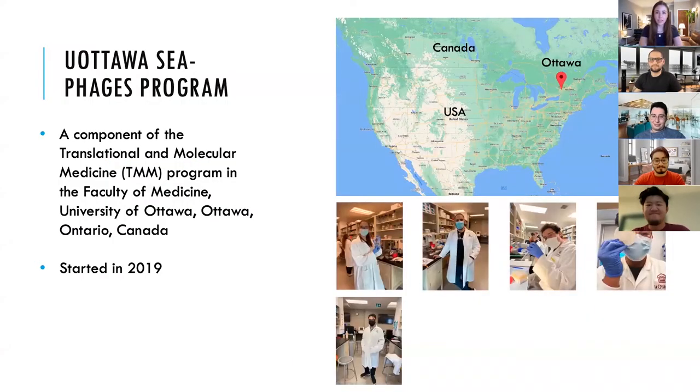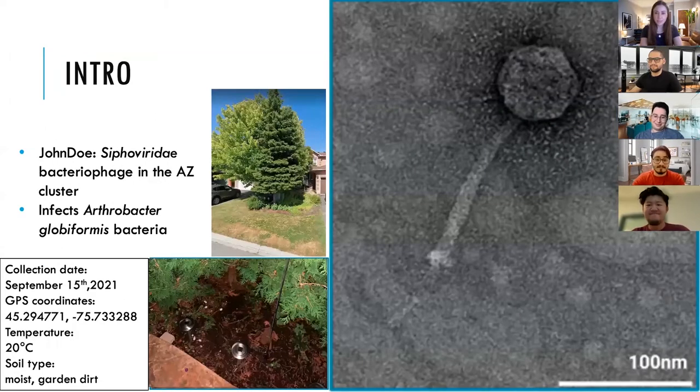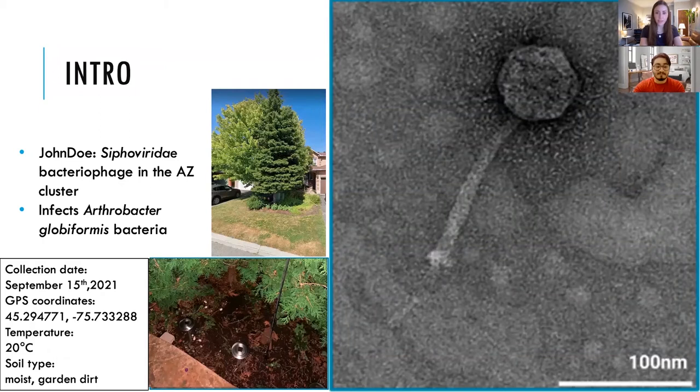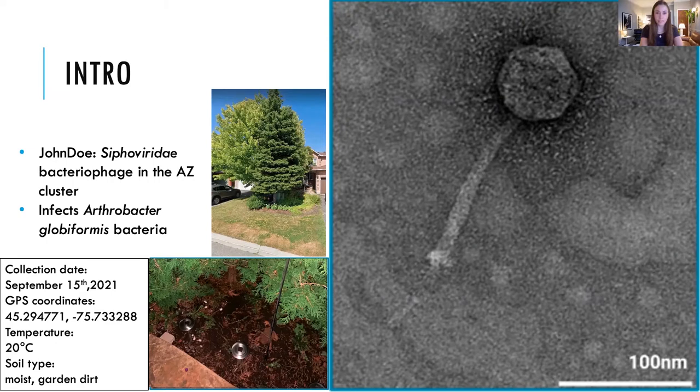Hi, we're a team of students at the University of Ottawa who are part of the UOttawa C-PHAGES program. I'm Rachel. I'm Shafiq. I'm Arvin. And I'm Osama. I'm Rae. In this presentation, we'll explore the characteristics of some proteins we found in bacteriophage John Doe, which was discovered in Ottawa by Kira Heffernan, a member of our faculty.